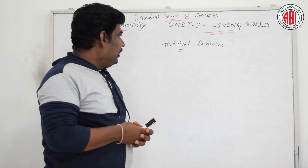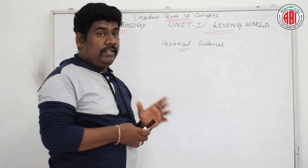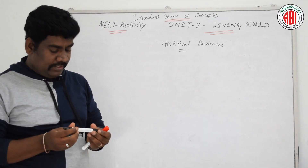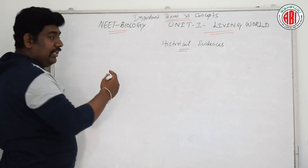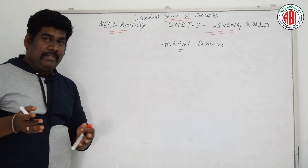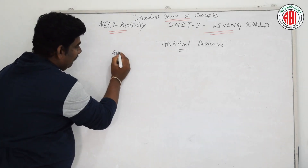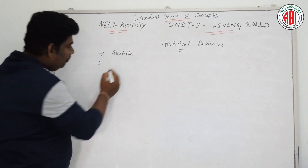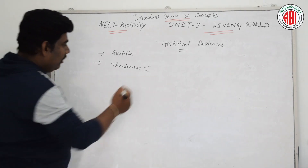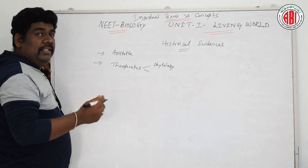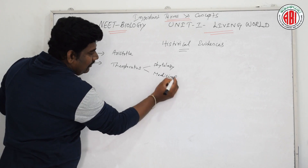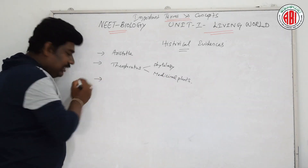Now we are going to discuss about the historical evidences for biological science in detail. The first credit goes to Aristotle, whose observations of different categories of plants and animals and his classification of plants and animals into two major categories is notable. Next, the credit goes to Theophrastus, who made phytology a branch of science dealing with plants and is responsible for identifying different types of medicinal plants — he is the father of medicinal plants.